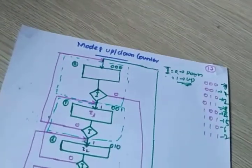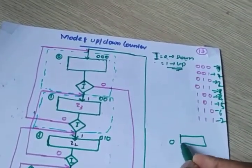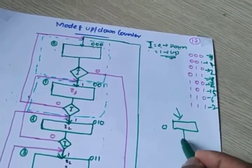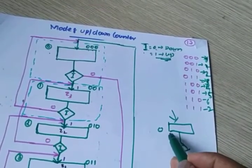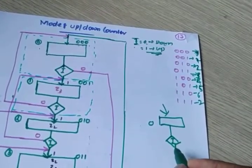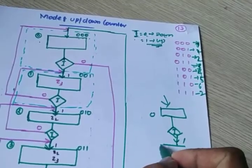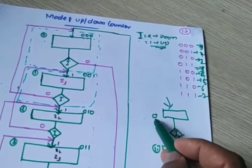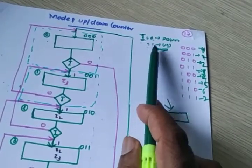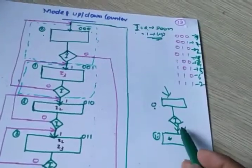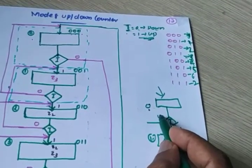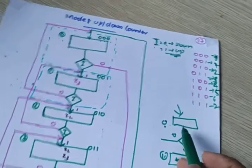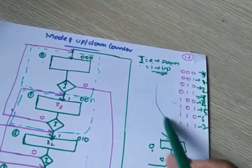So we need a decision box here. Initial state is 000. If i goes to 0, then a decision box for down. If the state is 0 and i is 1, it goes to another state. Initially it is 000. If i is equal to 1, up counter — next state is 001. If i is 0, down count. If initial state is 000 and down count, it should start from 111. First I will discuss the up counter, then I will discuss the down counter.